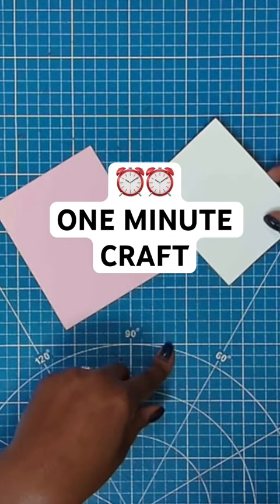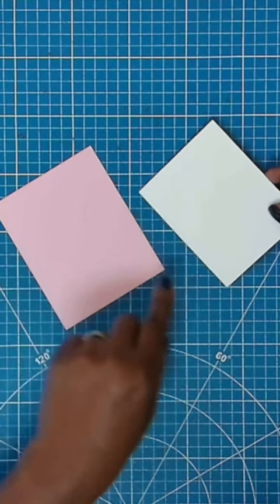Quick and easy way to make stationery in under a minute. We have a four by five piece of cardstock and a three and a half by four and a half inch piece of cardstock.